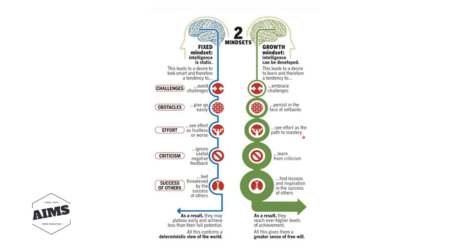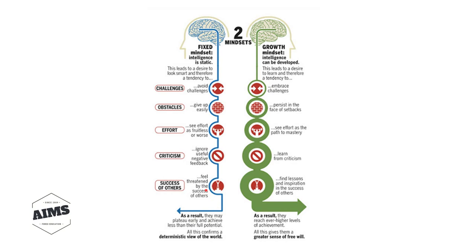The growth mindset sees effort as the path to mastery. When faced with criticism, a fixed mindset ignores useful negative feedback, but a growth mindset learns from criticism — evaluating it and finding the truth in it, which is very powerful. Regarding the success of others: a fixed mindset feels threatened and avoids those people, but a growth mindset finds lessons and inspiration in others' success. In a fixed mindset, people may plateau early and achieve less than their full potential.